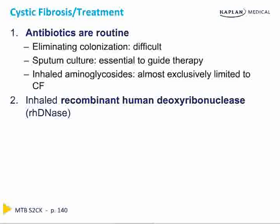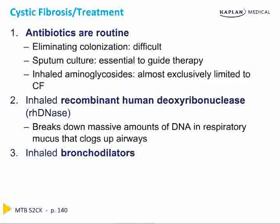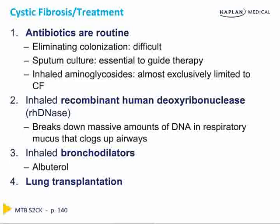Sometimes recombinant human DNAase (recombinant human deoxyribonuclease) is given as well — this helps break down the massive amounts of DNA in the respiratory mucus that clogs airways, DNA produced by an abundance of neutrophils trying to fight infections. Inhaled bronchodilators such as albuterol can also be very helpful, particularly in patients with a component of reactive airway disease. Finally, lung transplantation is needed in patients who become refractory to the above therapies.